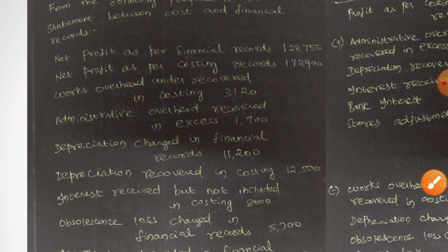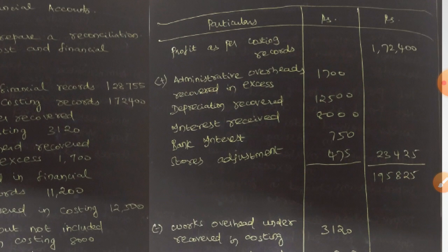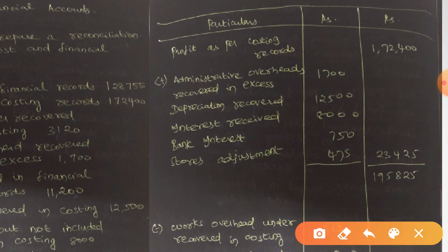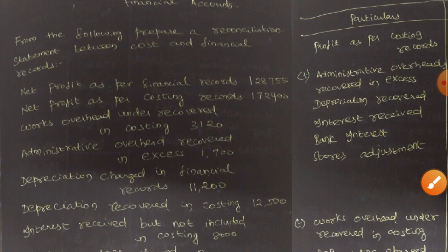The next information is administrative overhead recovered in excess: 1,700. Recovered in excess means it is surplus or in abundance, so it is a positive value. Therefore, you add this to your costing records. Administrative overhead recovered in excess — 1,700 — is added.